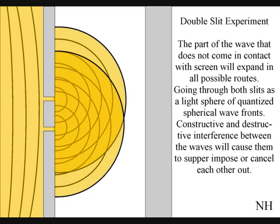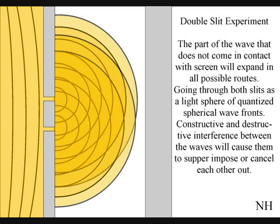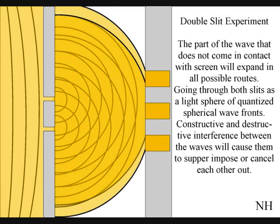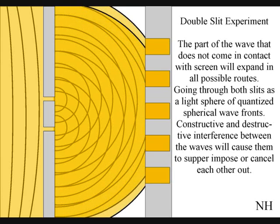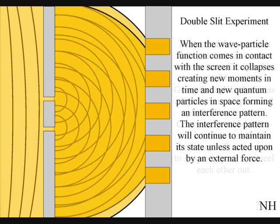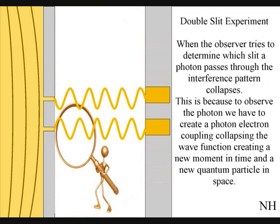The waves will then form constructive and destructive interference, and over a period of time an interference pattern will build up on the rear screen photon by photon. This interference pattern will continue as time unfolds photon by photon within the isolated reference frame of the experiment, and just as in Newtonian physics, only when an external force comes in contact with the light does the interference pattern collapse.